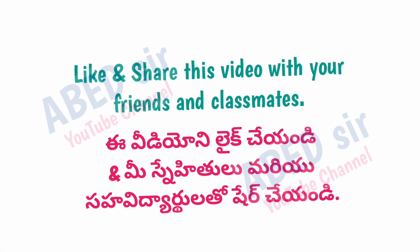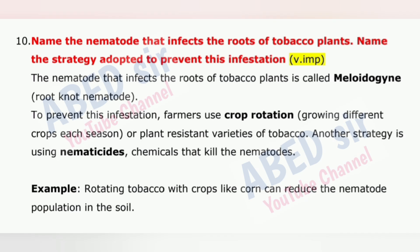Next important question is 10: Name the nematode that infects the roots of tobacco plants, and name the strategy adopted to prevent this infestation. The nematode that infects the roots of tobacco plants is called Meloidogyne, the root-knot nematode. To prevent this infestation, farmers use crop rotation — growing different crops each season — or plant resistant varieties of tobacco. Another strategy is using nematicides, chemicals that kill the nematodes. For example, rotating tobacco with crops like corn can reduce the nematode population in the soil.